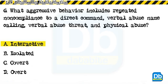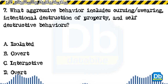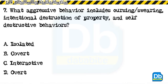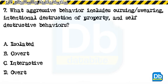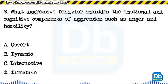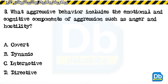The answer is A, interactive. Question 7: What aggressive behavior includes cursing, swearing, intentional destruction of property, and self-destructive behaviors? a) isolated, b) covert, c) interactive, d) overt. Question 8: What aggressive behavior includes the emotional and cognitive components of aggression such as anger and hostility? a) covert, b) dynamic, c) interactive, d) directive.